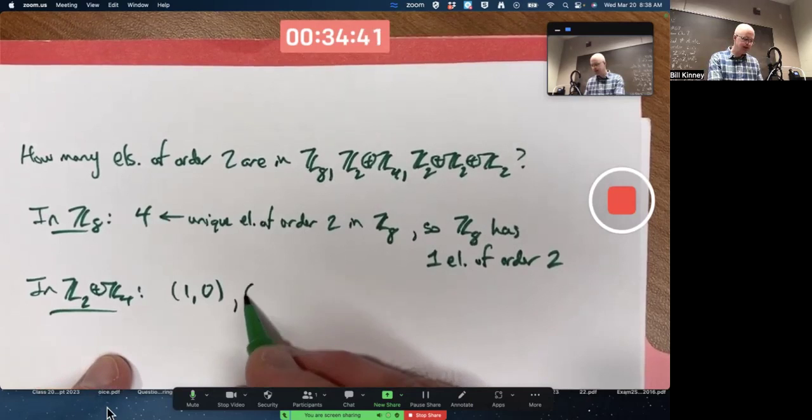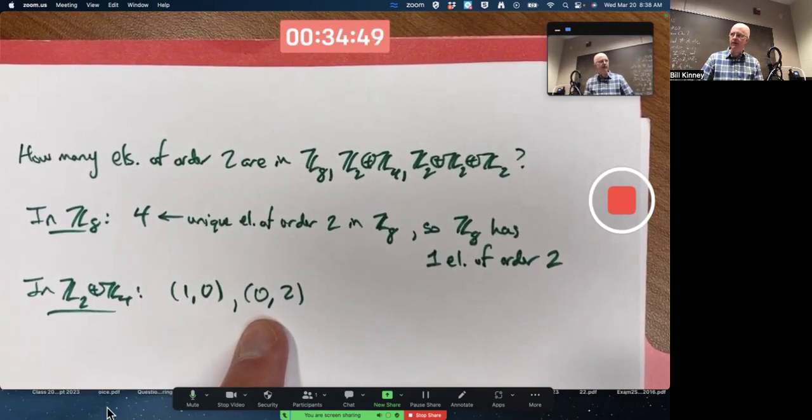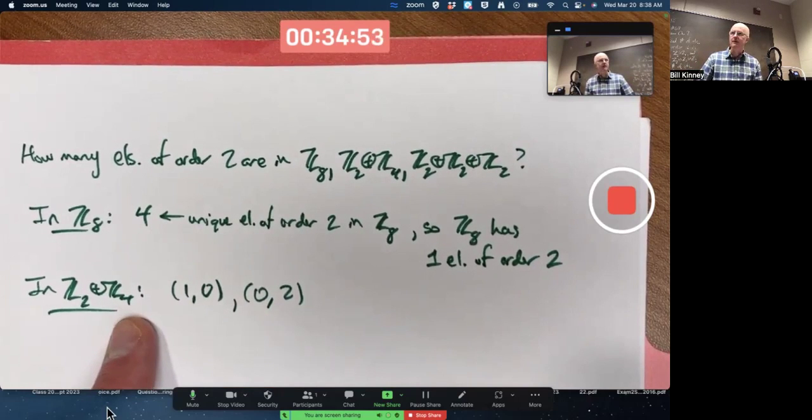Another element would be zero, two. Add this to itself, you get zero, four. But four mod four is zero. You get back to the identity.